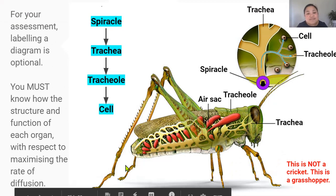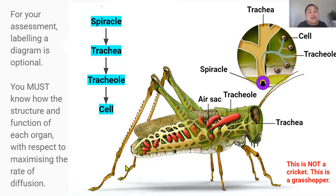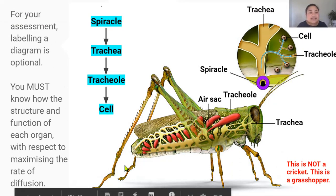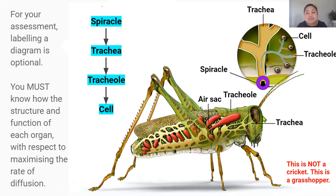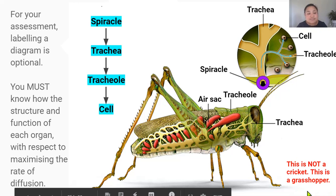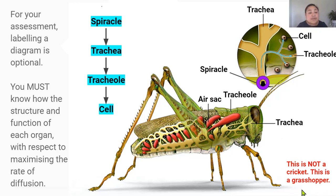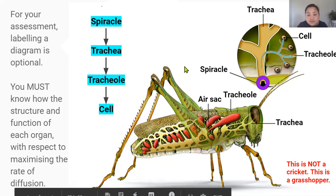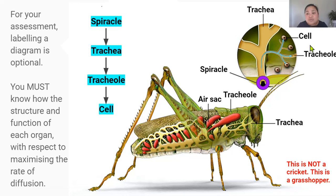Crickets have a tracheal system. Here's a clear picture of the tracheal system in grasshoppers. The tracheal system consists of the following structures: spiracles, tracheal tubes, tracheoles, and air sacs.